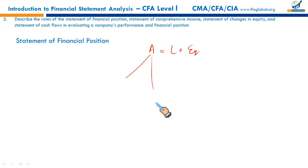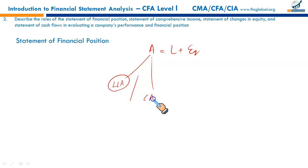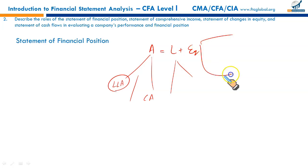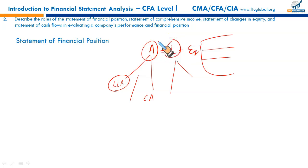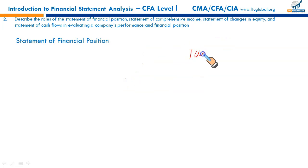Assets are the resources controlled by the firm — not necessarily owned. They are segregated into long-lived assets (the US GAAP term) or non-current assets (used by the rest of the world) and current assets. Liabilities are split into current and non-current liabilities. Equity exists in different forms and represents the residual interest — what remains after settling all external liabilities. For example, if a firm has $100,000 in total assets and $70,000 in external liabilities, the equity is $30,000.